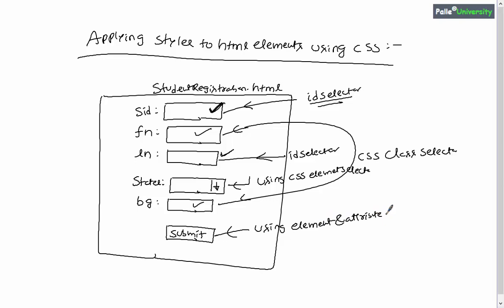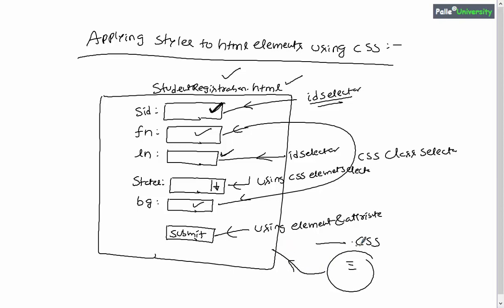So I believe you understood what I am going to do in this sample. Now let me start writing the code for the HTML file first. After writing the HTML code I will create a CSS file and define all the selectors with styles in it. Then I will explain how to link the CSS file to the HTML file, and how to apply those styles to individual elements.